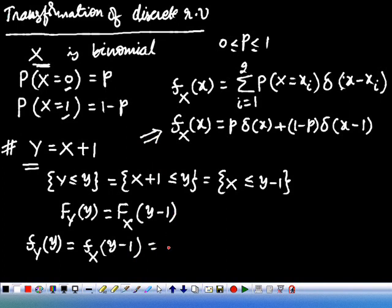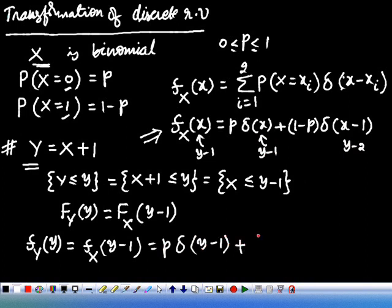Therefore, f_Y of y equals f_X of y minus 1. That is, we replace x with y minus 1. Here it becomes y minus 1, and here y minus 1 minus 1. Therefore, the answer is P delta of y minus 1 plus 1 minus P times delta of y minus 2. Thank you.